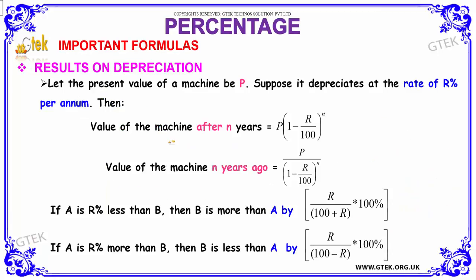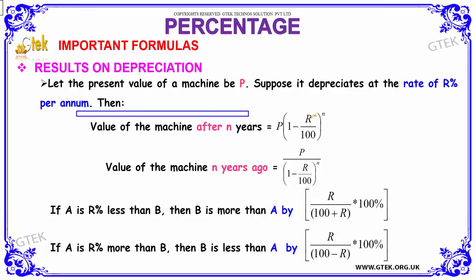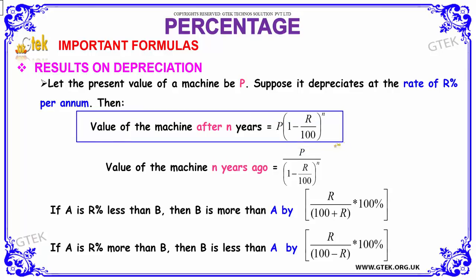Percentage can also be used to calculate the present value of a machine, or the machine's value after n years, or the value of a machine n years ago. If you have the present value of a machine to be P and suppose the value depreciates at the rate of r percentage per annum, then the value of the machine after n years will be given by the formula: P into (1 minus r by hundred) the whole power n.